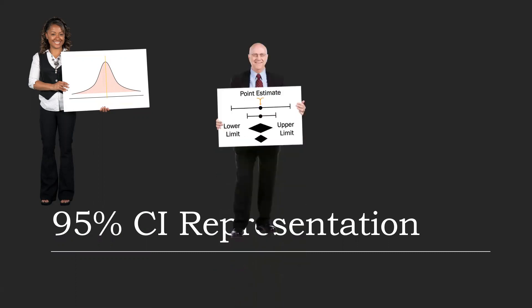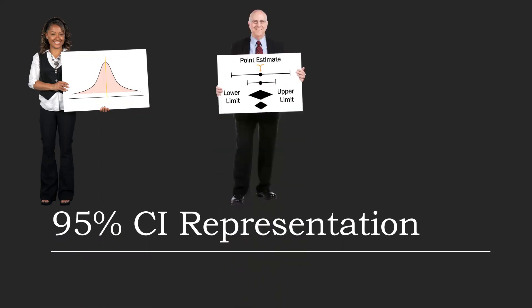They can also be displayed in graphical form as a line with a dot in the middle or as a diamond. The line either side of the dot represents the upper and lower limits of confidence, with the dot representing the point estimate. The diamond's width represents the same upper and lower limits.